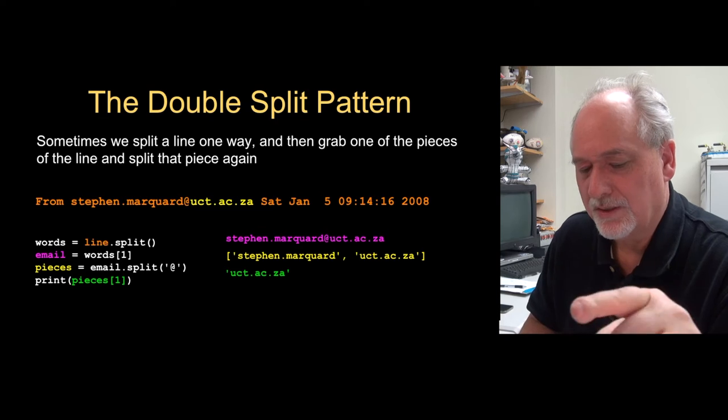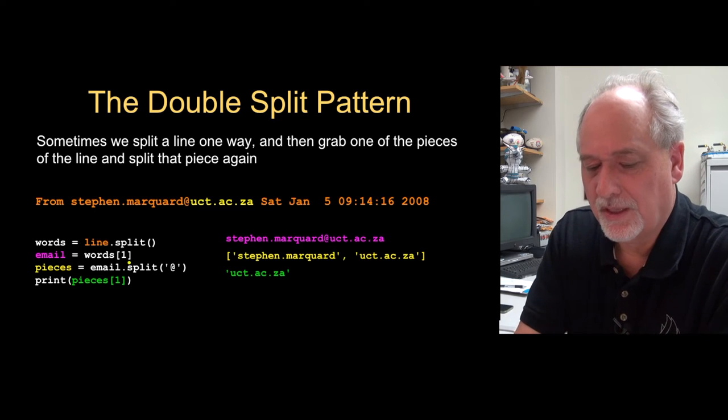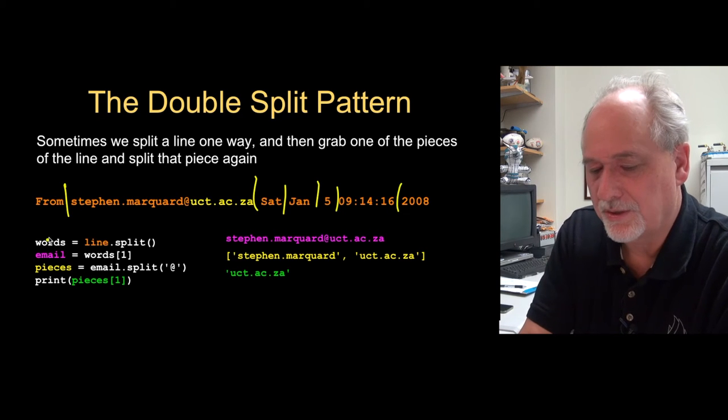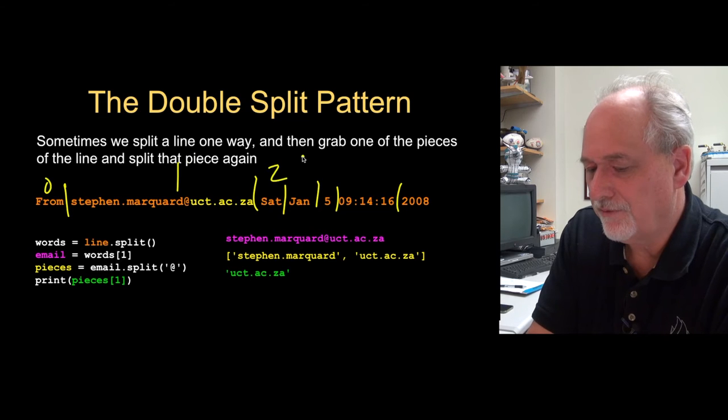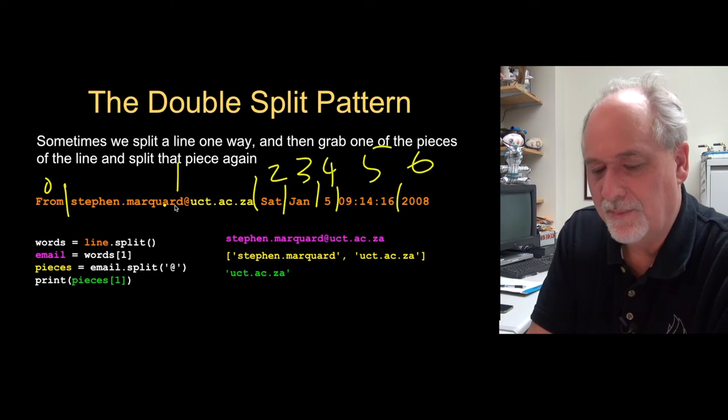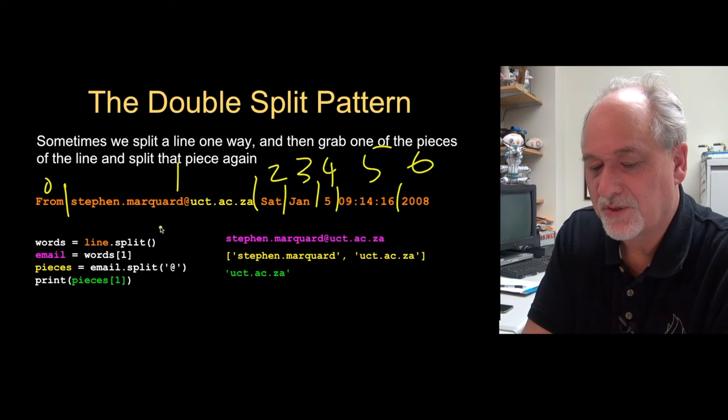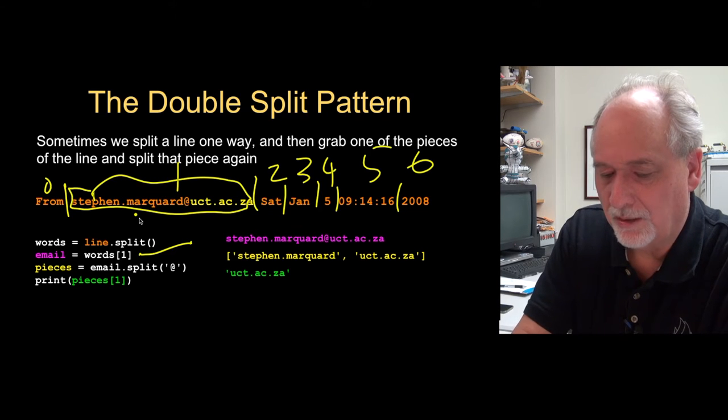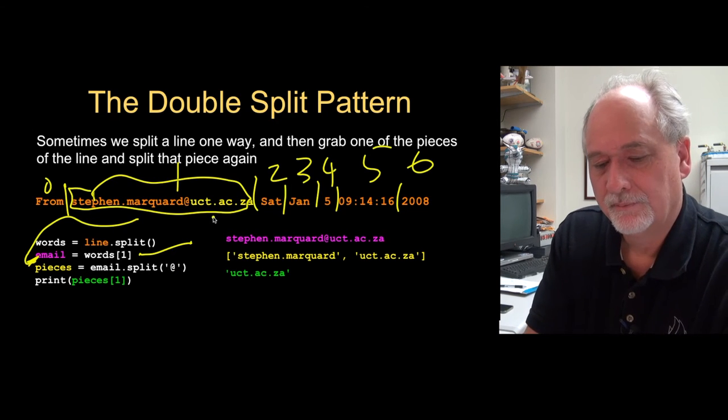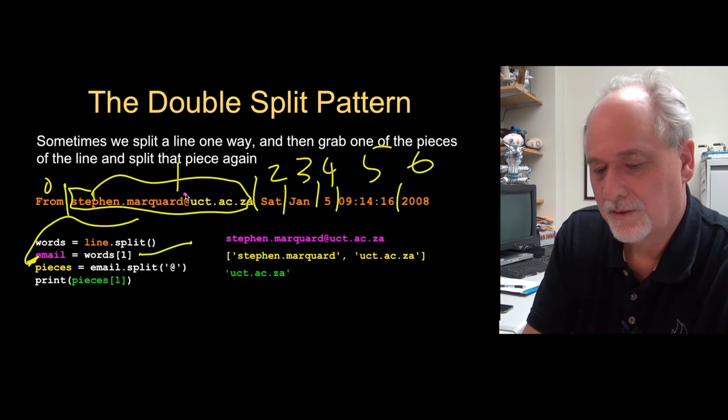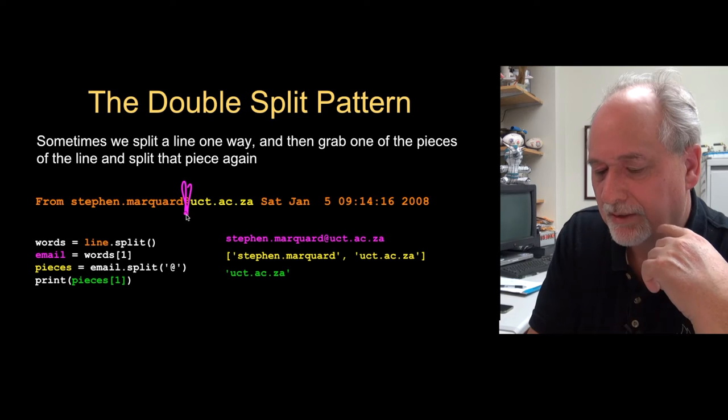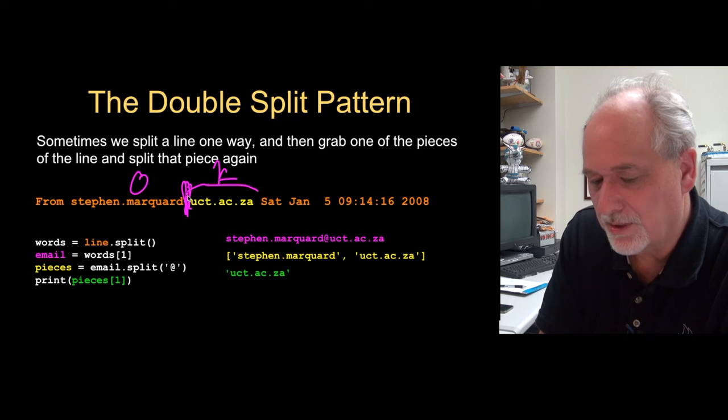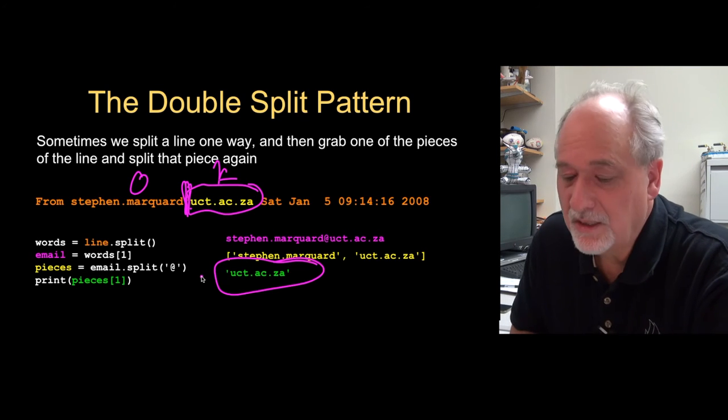The next way we did this was the double split pattern. So we said, okay, let's take this line, let's break it into words based on spaces. That's what words is. So that's zero, one, two, three, four, five, six. And then we know that the email address on lines that start with from space is the second one. So we pull out email address which pulls this bit out into email. And then we're going to split that again based on the at sign. So we're going to split this part again based on the at sign. So it splits right there and then this becomes the zero and one in pieces. And then pieces sub one is that host. And if we print that out, we get the host. So that's the double split pattern.